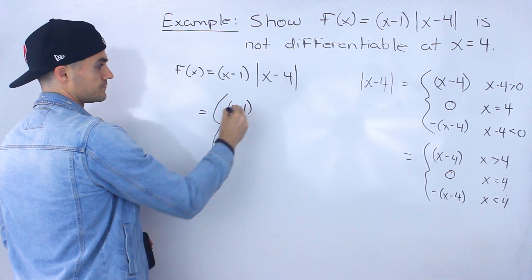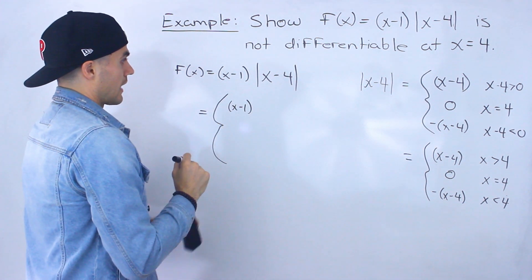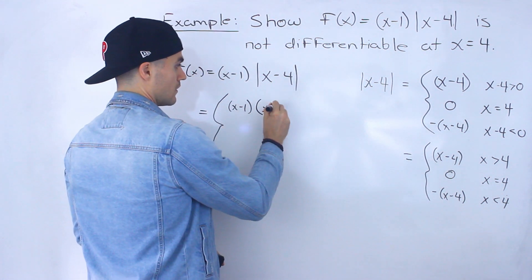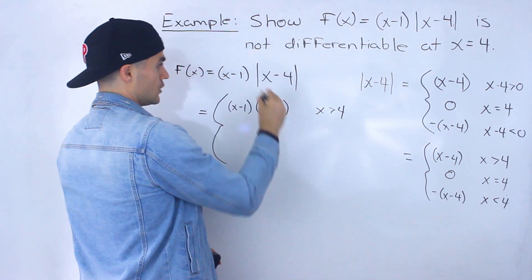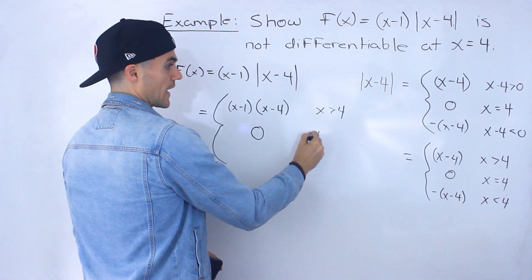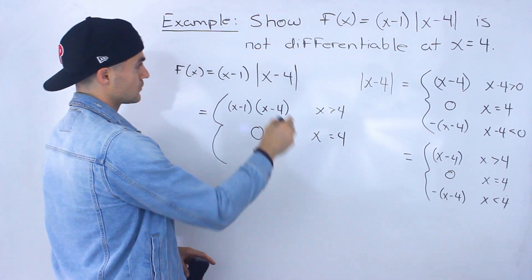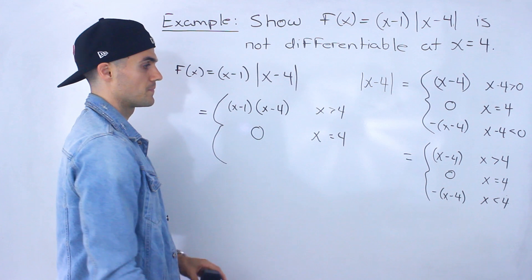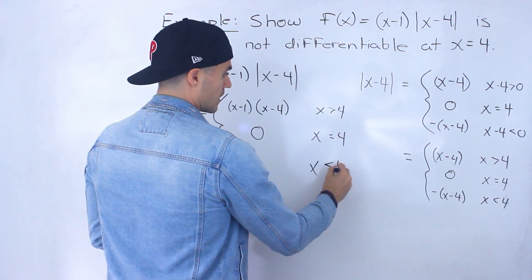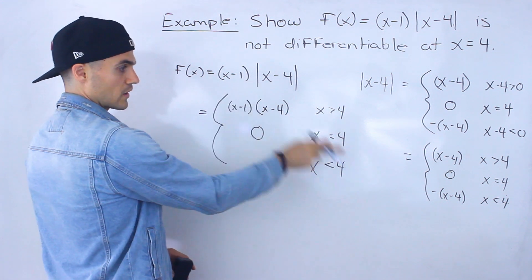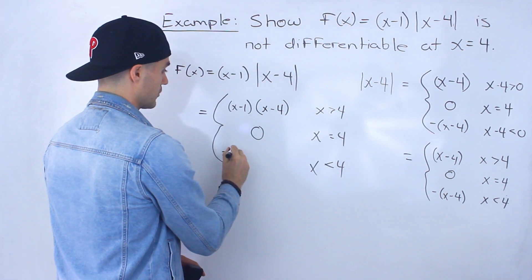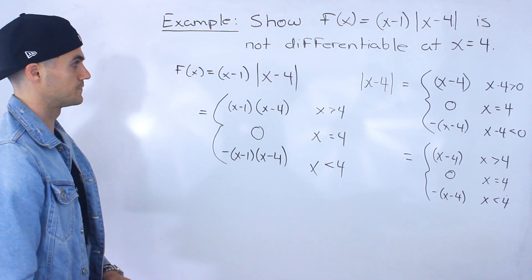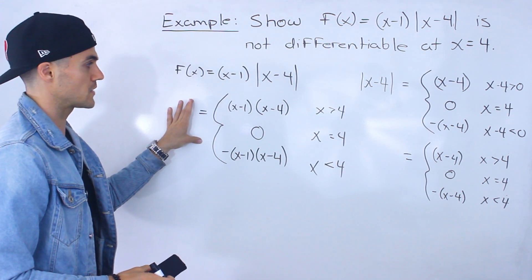The (x minus 1) factor is always there. So the absolute value of x minus 4 equals positive (x minus 4) when x is greater than 4. The whole function equals 0 when x equals 4, because x minus 4 is 0 there, so 3 times 0 is 0. And when x is less than 4, we have x minus 1 times negative (x minus 4), which gives us negative (x minus 1)(x minus 4).